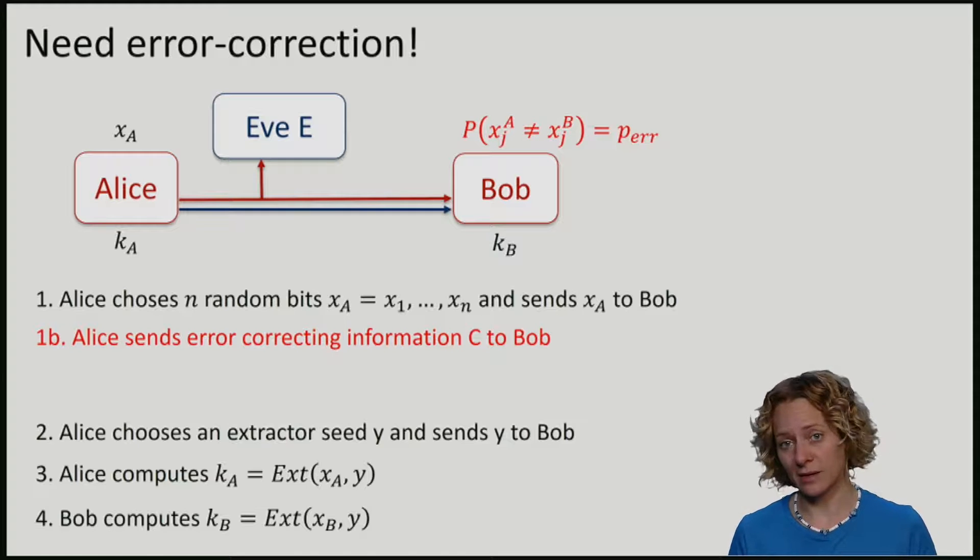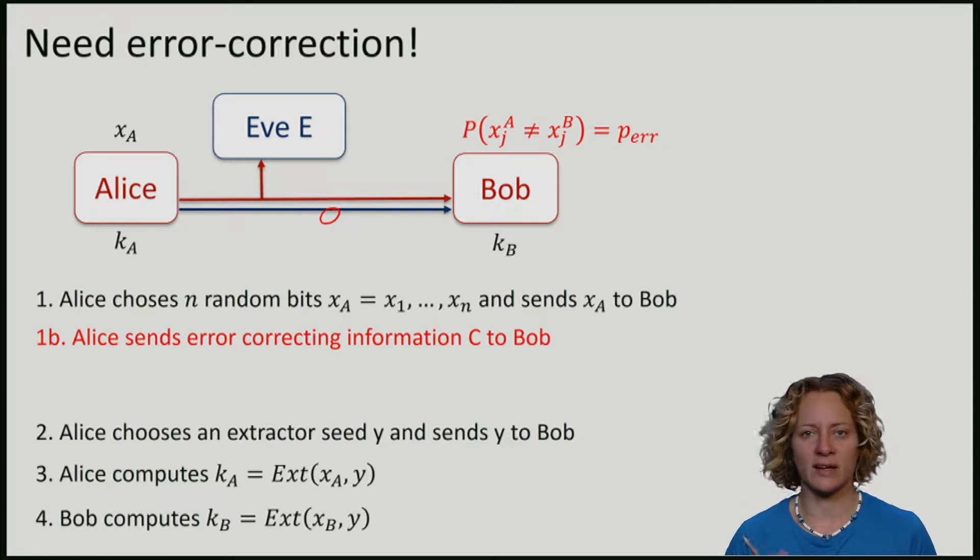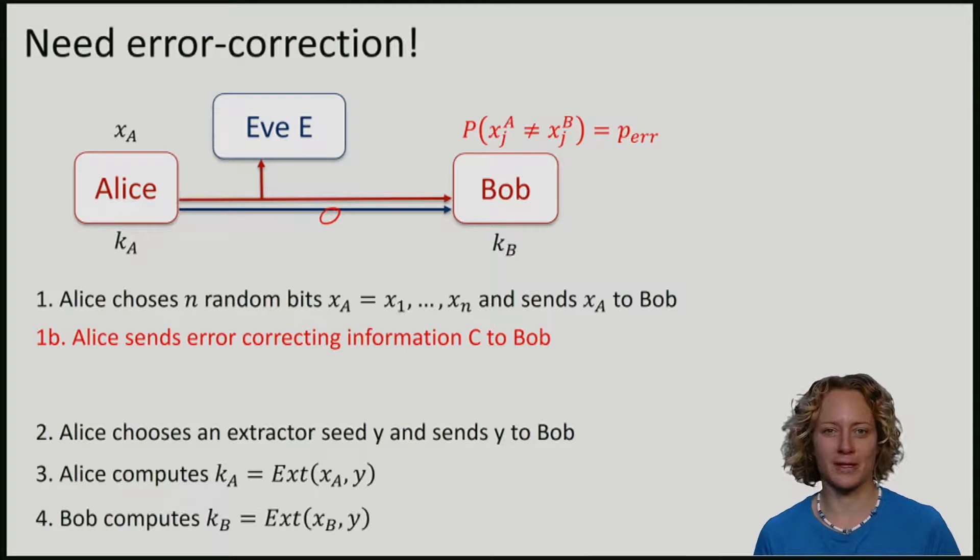These are just classical bits, and she will send them over the blue classical channel, which has no noise, but Eve has full access to that channel. Of course, having full access, she can also get the error-correcting information C.